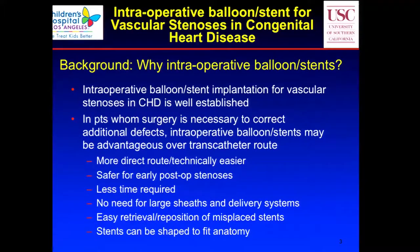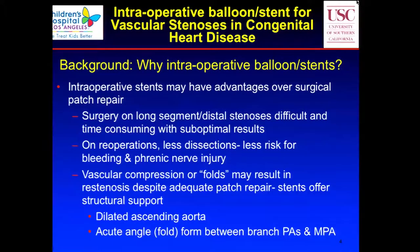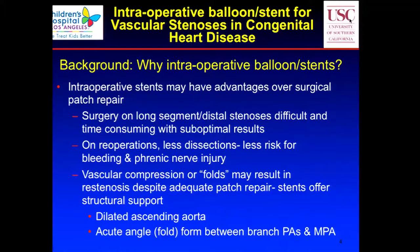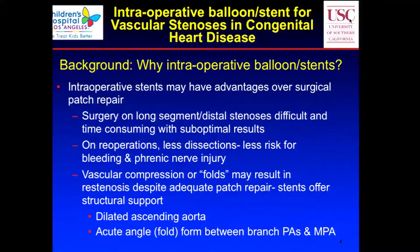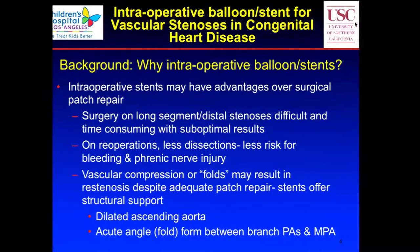You can easily retrieve or reposition the stent if it's not in perfect position, and stents can be shaped to fit the anatomy of the specific patient. Intraoperative stents may also have advantages over surgical repair — surgery on long-segment stenosis can be difficult, time-consuming, and often yields suboptimal results especially in the pulmonary arteries. On reoperations, dissection can be a big problem, especially outside the heart where you worry about the phrenic nerve. Vascular compressions or kinks can persist no matter how good a patch you put in, and stents can offer structural support.